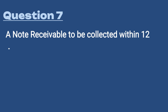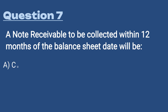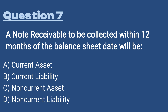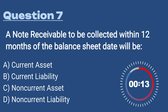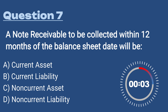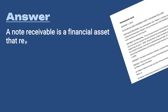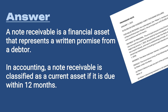Question 7: A note receivable to be collected within 12 months of the balance sheet date will be: A) A current asset, B) A current liability, C) A non-current asset, D) A non-current liability. The answer is A, a current asset. A note receivable is a financial asset representing a written promise from a debtor — a promissory note from a legal standpoint. In accounting, a note receivable is classified as a current asset if it is due within 12 months of the balance sheet date.